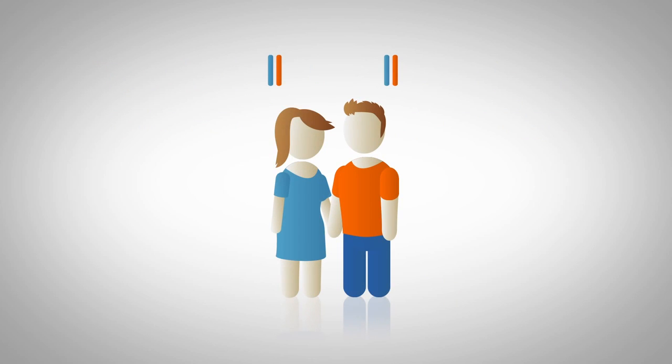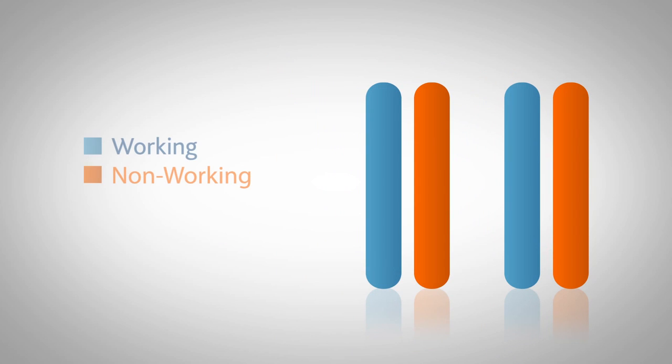In this example, Anne and John are perfectly healthy, but each carries a copy of the same non-working gene. Both are healthy because the normal working copy of the gene compensates.